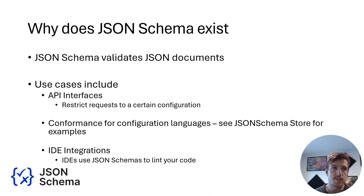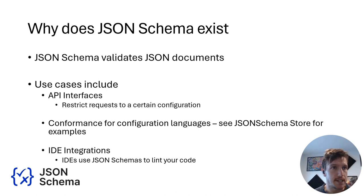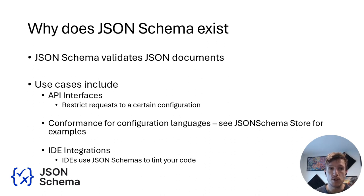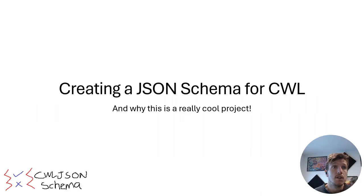More importantly, why does this exist? JSON Schema can validate JSON documents. In the previous example, workflows from GitHub Actions must adhere to the schema in the example above to be considered valid workflows. JSON Schemas have a wide range of use cases: API interfaces — submit your data to a REST API, and before it even bothers to start processing the submission, it can first confirm that the payload you've sent is even valid. JSON Schema can be used for conformance of configuration languages written in JSON or YAML, since YAML is just JSON with comments. You can check out JSON Schema Store at schemastore.org for examples. A bonus is IDE integrations — IDEs use JSON Schema to confirm your code looks good. So since CWL is written in YAML, like GitHub Actions workflows, does this mean that we can create a JSON Schema for CWL?